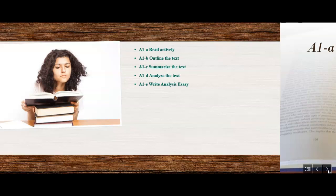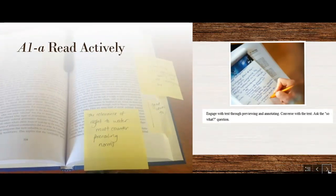First of all, A1 is called Read Actively. The text shows you and tells you that you need to engage with the text, and we can engage in a variety of ways. The first way is to preview. It's always recommended to take a look at titles and subheadings and the author and any images that are there. Preview the text and get an idea of where you're headed.